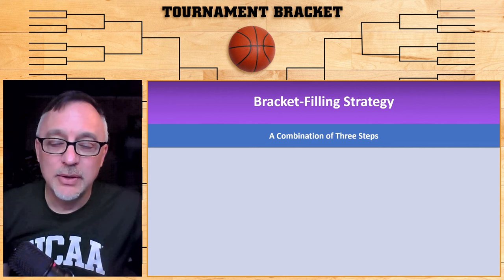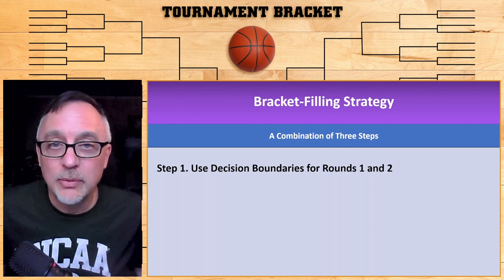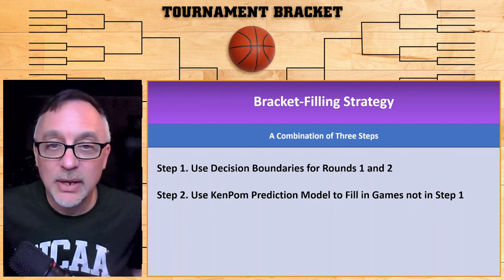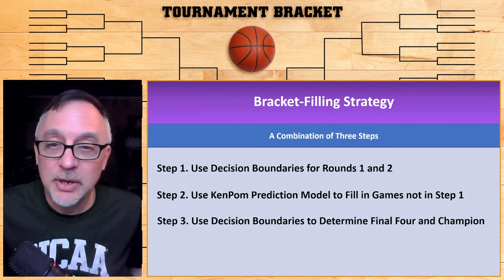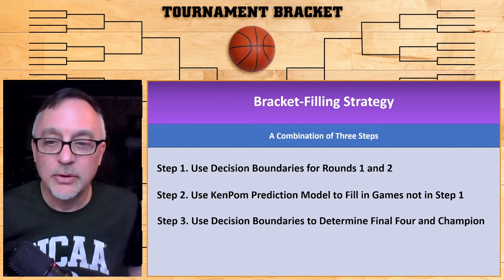Now that we have this, we can make our own spreadsheet and run the prediction values. As I mentioned in my previous videos, I'll still use the decision boundaries for rounds one and two as the first step, since those boundaries gave us 90% accuracy in round one and 80% in round two. For any games not decided by those boundaries — which is the question I got from viewers — we go back to this Ken Pom prediction model in Excel to pick the winner. I'll also use the decision boundaries to pick my contenders and put those teams in the Final Four. You'll see all of this on Monday night when I fill out my brackets.